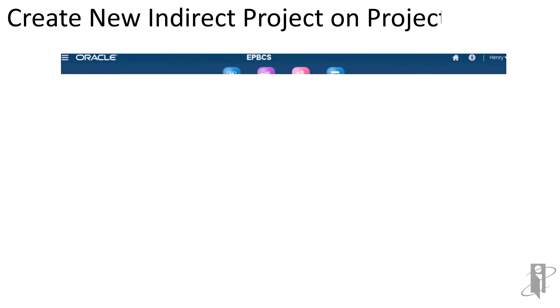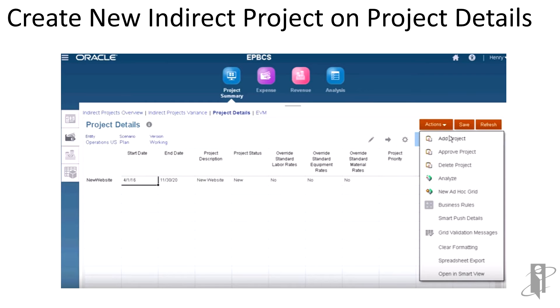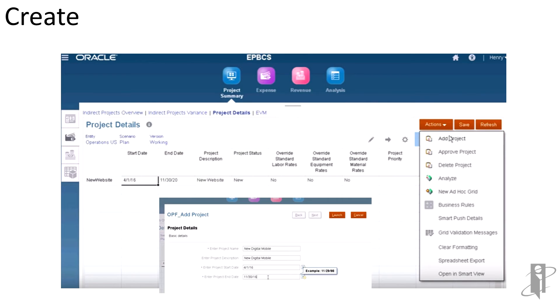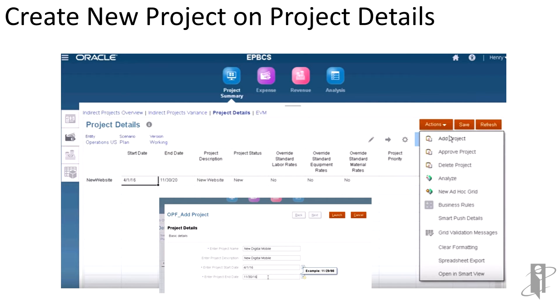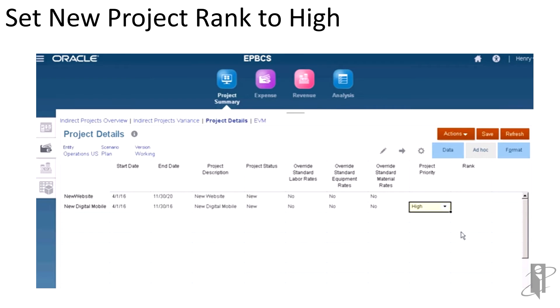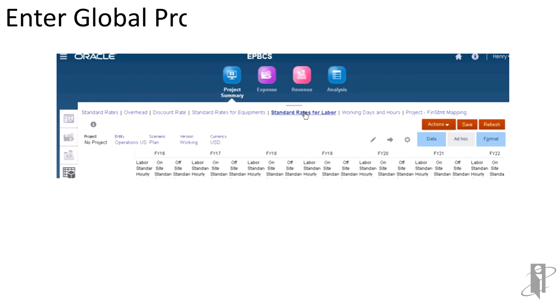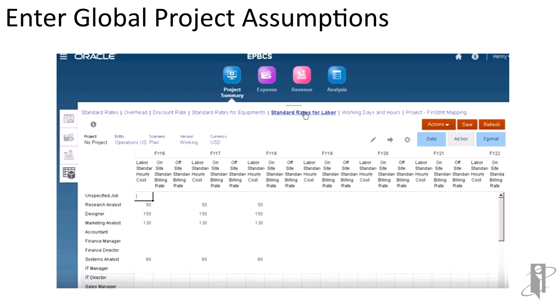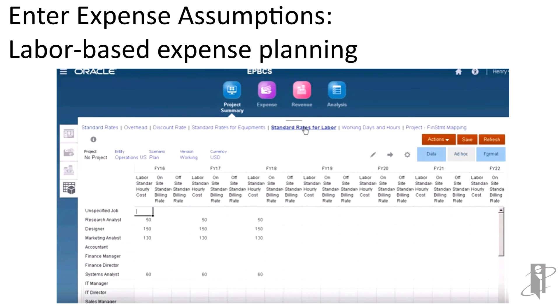So let's say I want to create a new indirect project. I'm going to go up to my actions on my project details form and choose Add a Project. I'll be able to put in my high-level project details — the project name, the description, the estimated start date, the estimated end date. I can give it a ranking, how important the project is to me, and provide some high-level assumptions about the project, maybe some standardized billing rates, maybe some expectations of how many people are going to be on the project and what time frame. I can give it more detailed expense planning based on that labor detail.